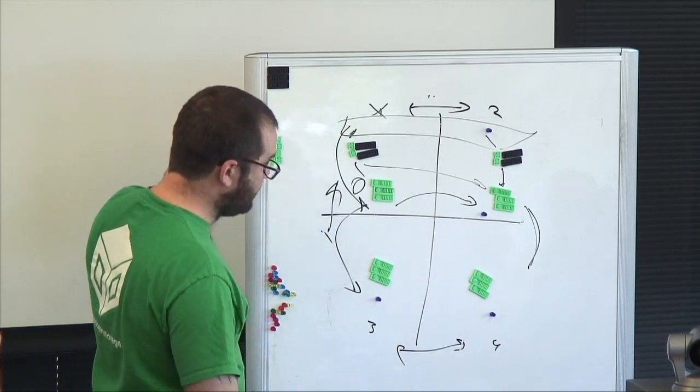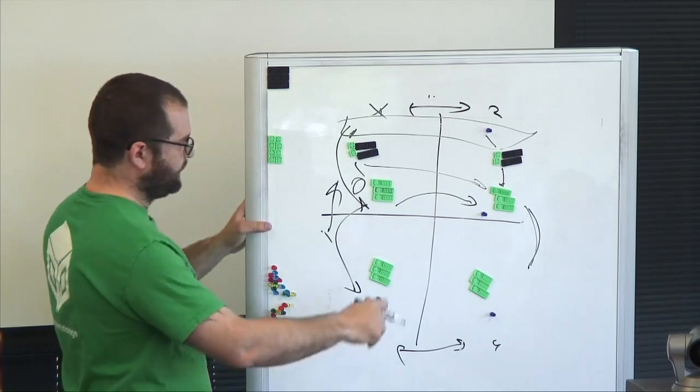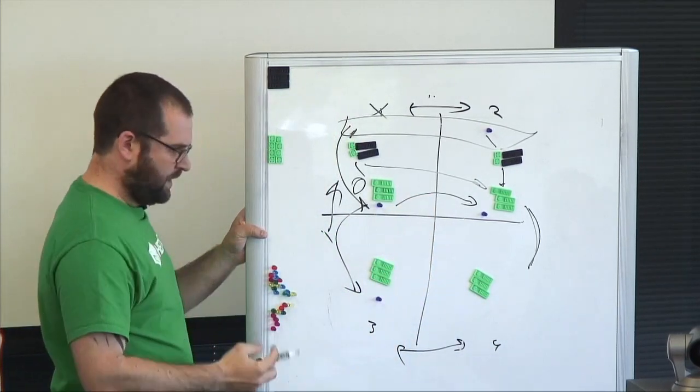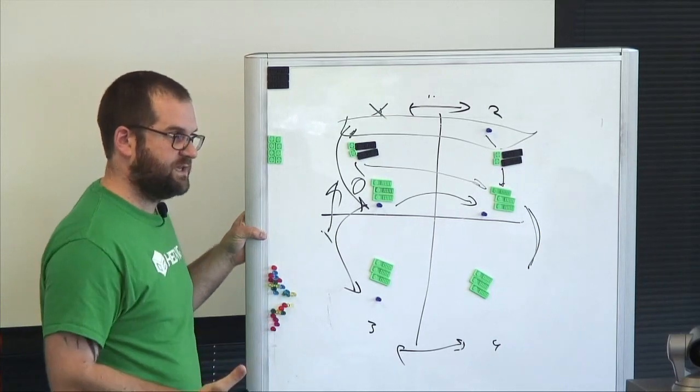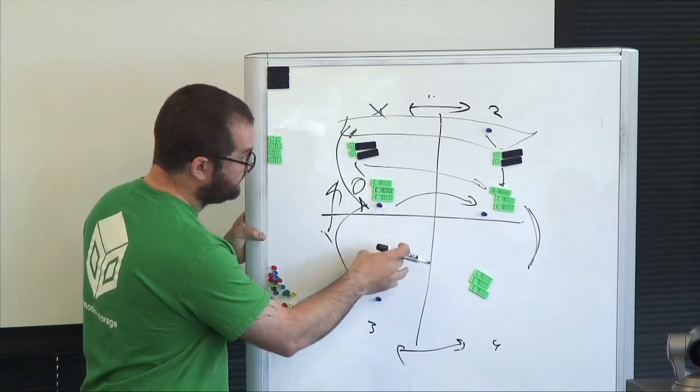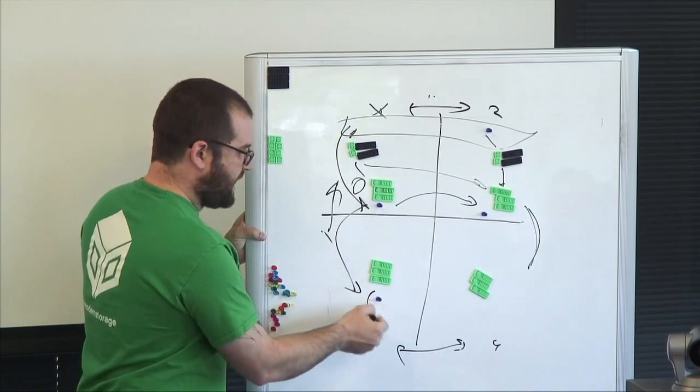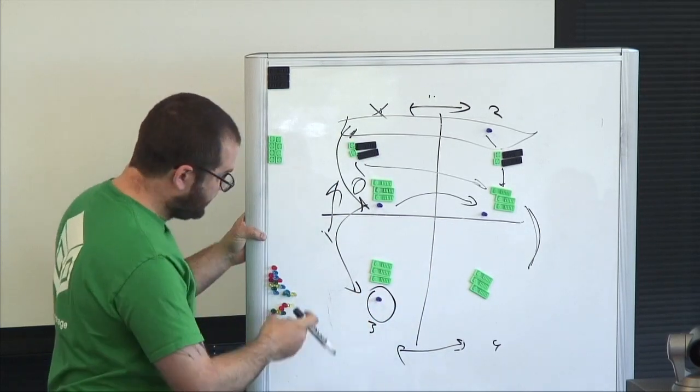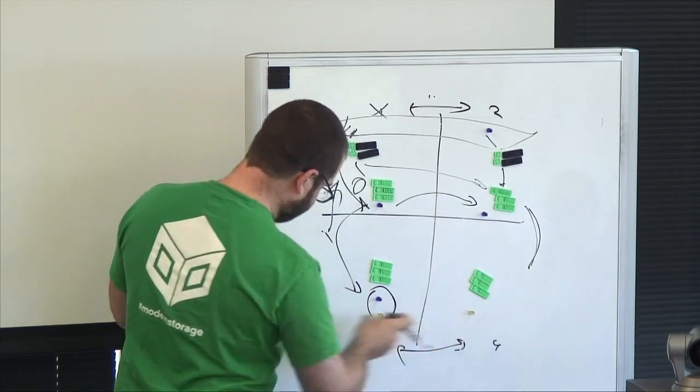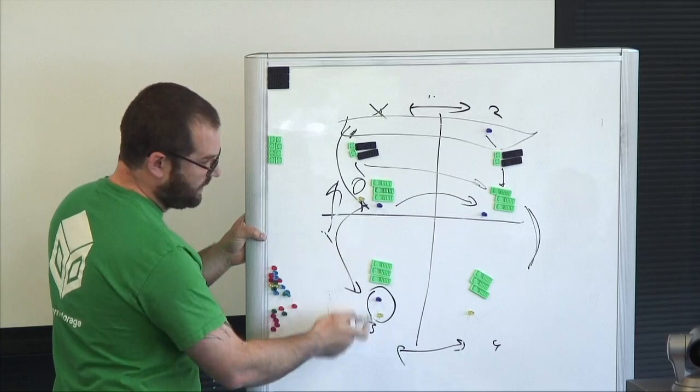Because we've got different policies on a V disk level, we can target the foreign data center and clone this V disk, giving it completely separate policies for where to store the data.